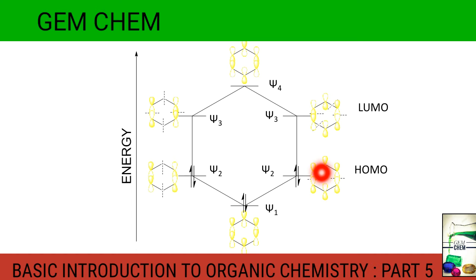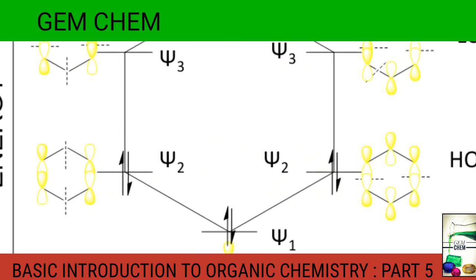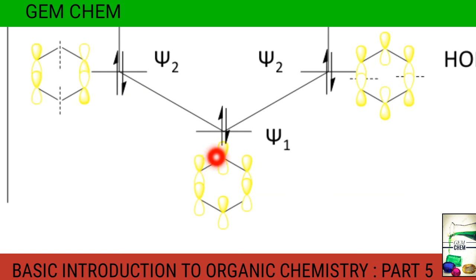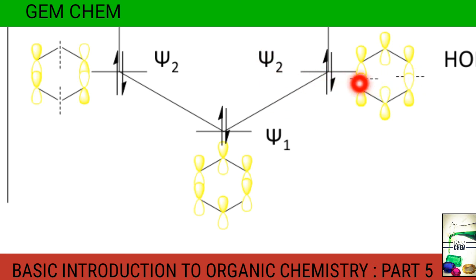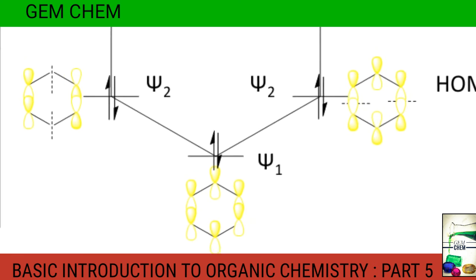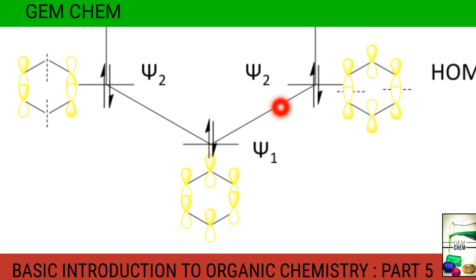When constructing MOs for cyclic hydrocarbons, always keep one vertex of the polygon pointing downward. For ψ₁, all six 2pz orbitals combine in phase — there is no nodal plane. For the degenerate ψ₂ pair, nodal planes are placed at different positions: in one case a nodal plane passes through two sides giving a phase change, and in the other case two other sites have a phase change, while certain pairs remain in phase.